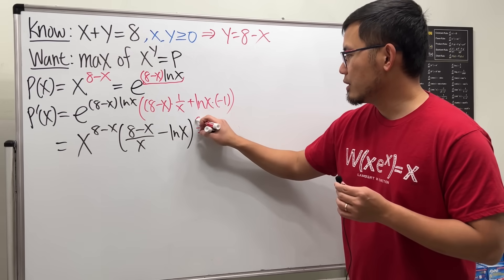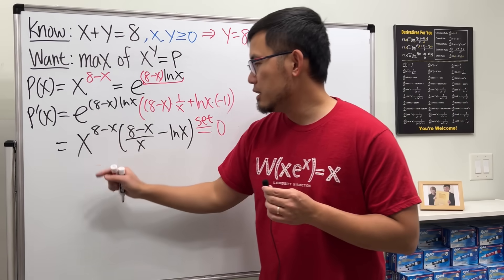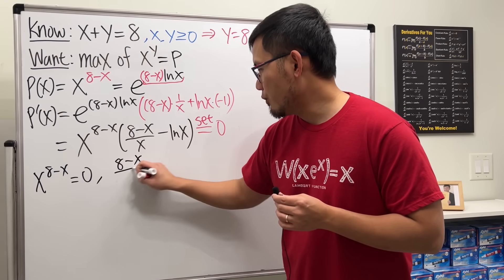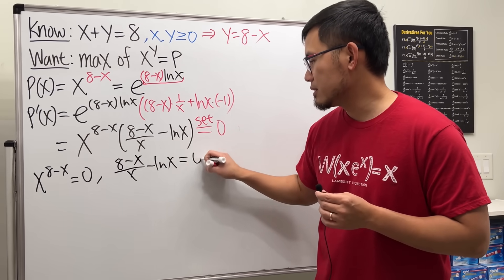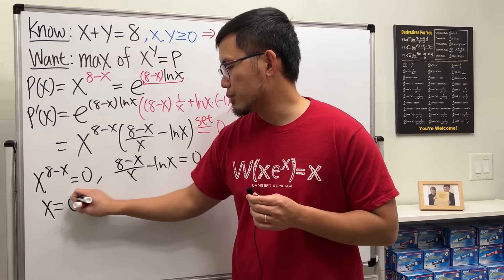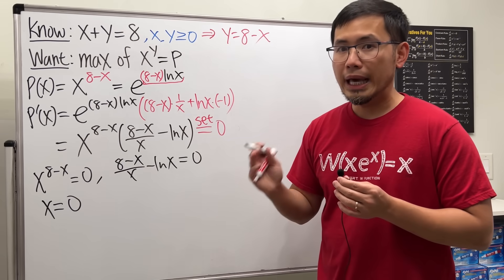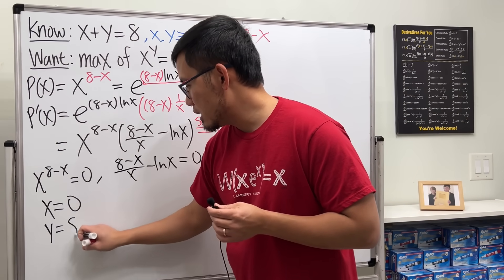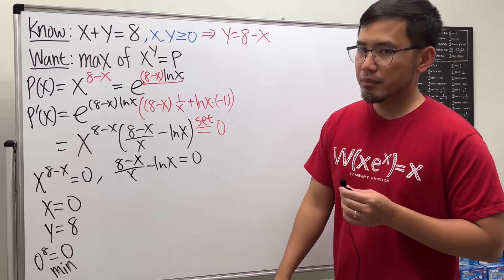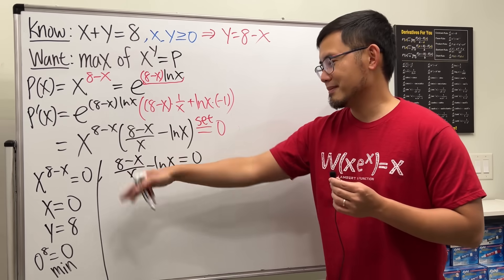To get the critical numbers, set p'(x) equal to zero. We have a product of two things equal to zero, meaning x to the (8 minus x) equals zero — giving x equals 0 by observation — or (8 minus x)/x minus ln x equals zero. For x equal to 0, if we put that back, y equals 8, and we get 0 to the 8th, which is just 0. This is going to be a minimum — that's not what we want.